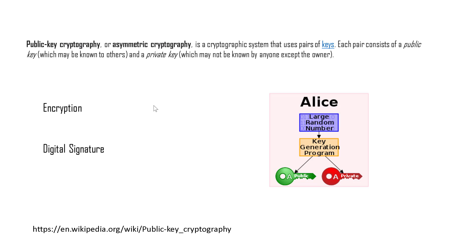In our previous chapter we discussed KMS and how you can use symmetric cryptography with KMS. In this chapter we'll talk about how we can use KMS along with asymmetric cryptography. Now asymmetric cryptography is a huge topic in itself, and I'll send links to Wikipedia in the description below so you can go through that.